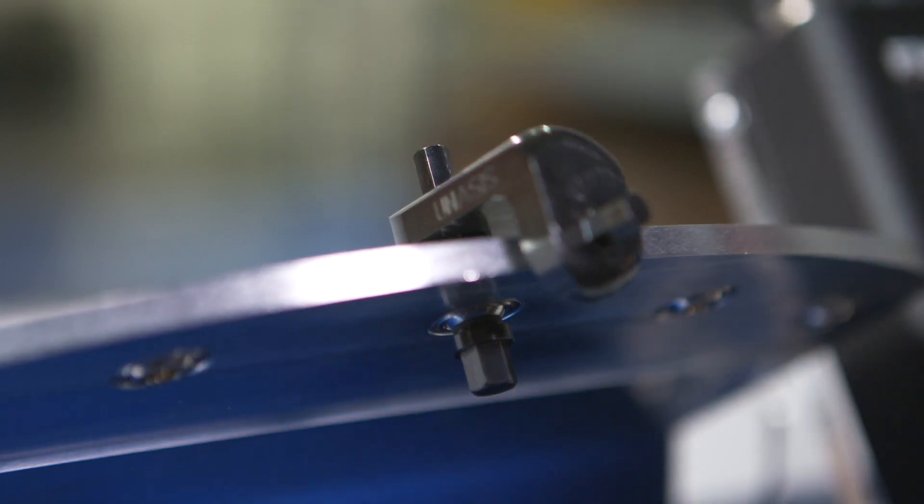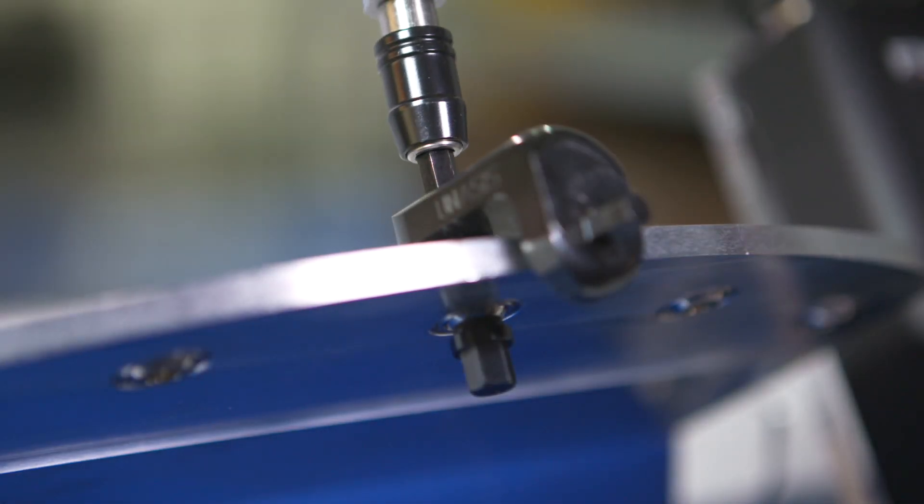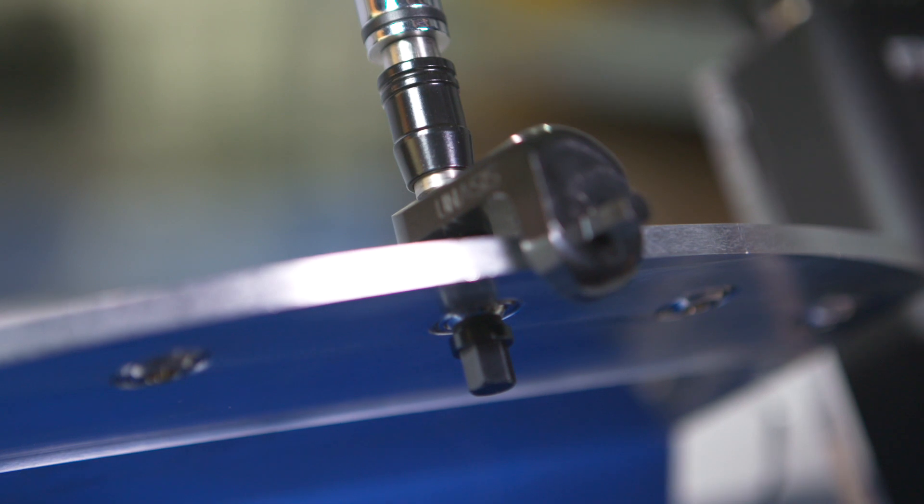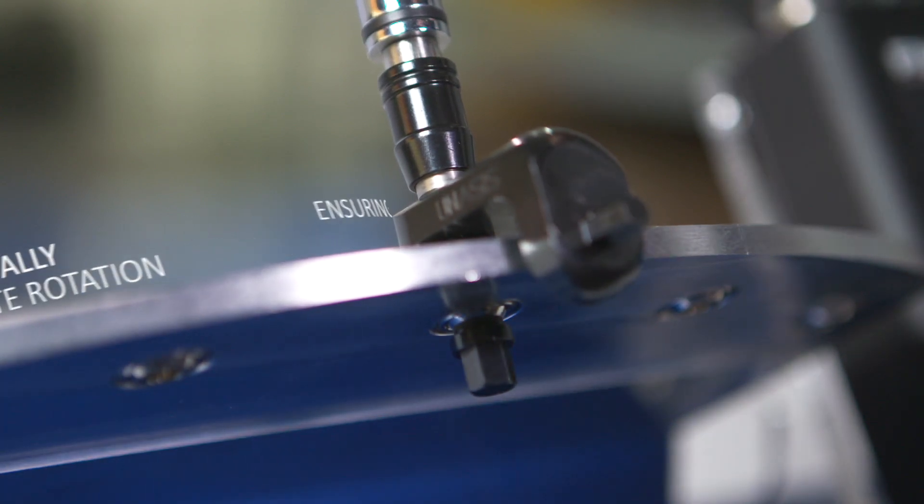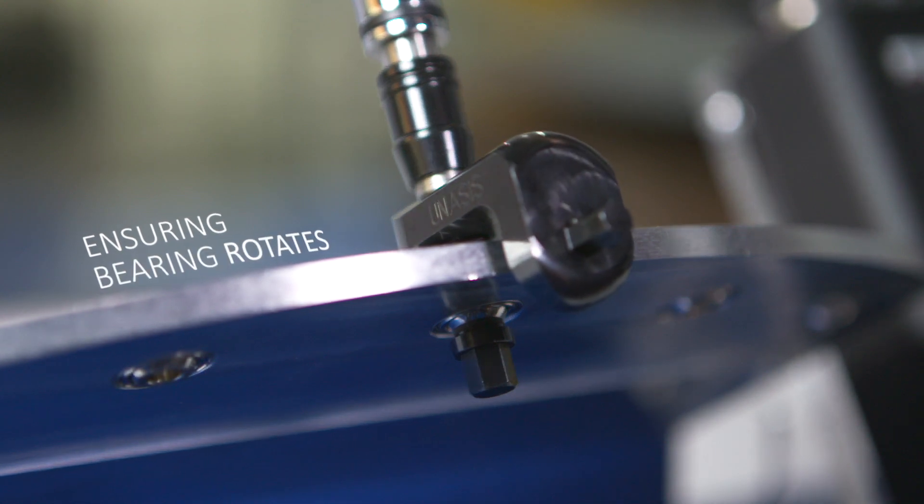Now you can test for the breakaway torque. Insert the digital torque reader onto the hex head of the shaft. Gradually initiate rotation on the tool, as slowly as possible, ensuring the bearing is rotating and not only the tool.